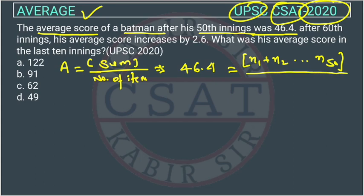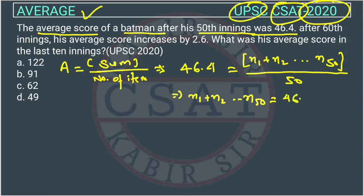I am explaining this in detail so every student can understand. Even students who know the basics should focus, because in the exam the examiner tries to confuse you on the basics. In UPSC they want to check your basic understanding, not just speed or calculation. So N1 + N2 + ... + N50 = 46.4 × 50, which equals 2320.